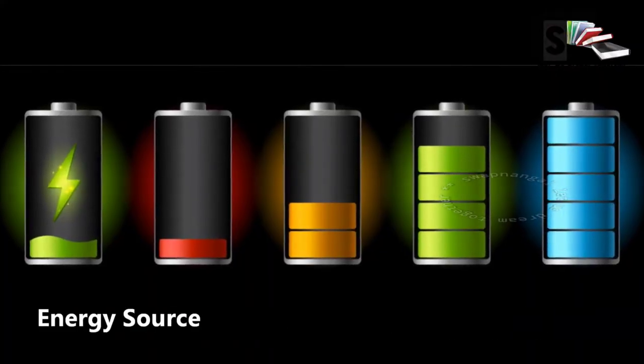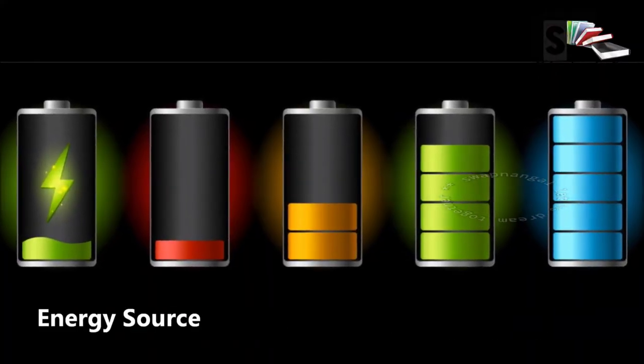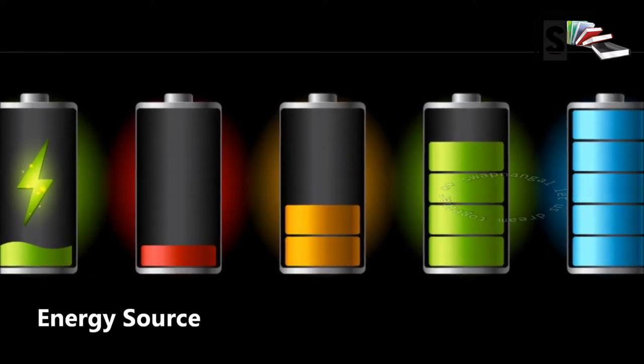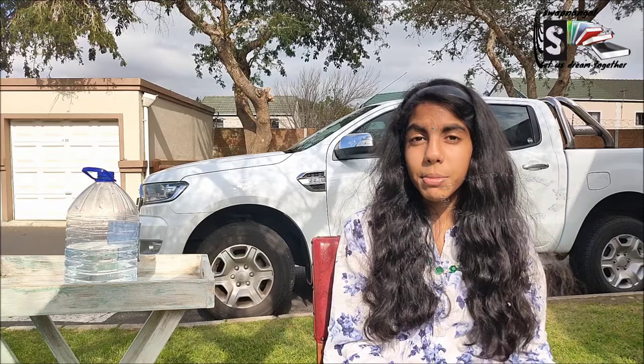Let's begin with the energy source. The source of energy for an electric circuit is from a cell or more cells. When it is more than one cell, then we call it a battery.